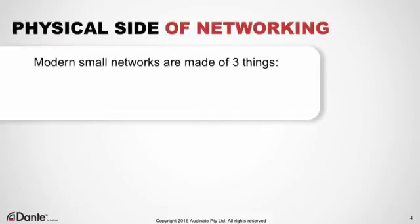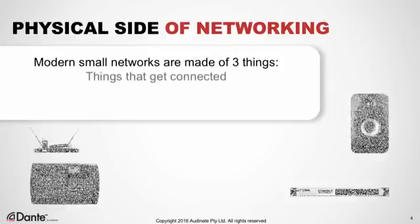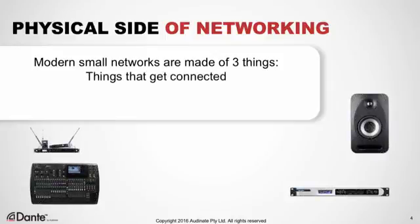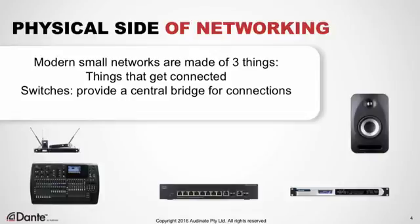Let's start with the physical side of networking. From a networking perspective, most Dante systems are small and simple, and they're usually just doing one thing: passing Dante audio and control. There are really just three types of objects on that kind of simple network: the things that you connect — in this case, audio devices and probably a computer or two — and a switch, or switches, which act as bridges that connect everything together.